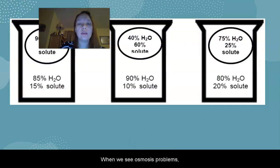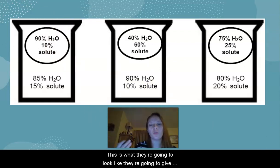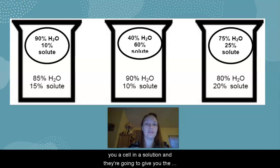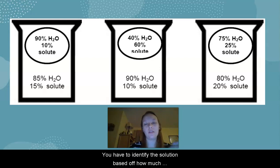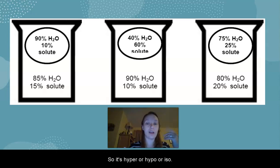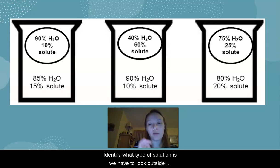So when we see osmosis problems, this is what they're going to look like. They're going to give you a cell and a solution, and they're going to give you the concentrations. So in this scenario, you have to identify the solution based off how much solute there is. So it's hyper or hypo or iso. But the movement in this case, we're talking about osmosis. So water is what's moving. So to identify what type of solution it is, we have to look outside and inside at that solute.